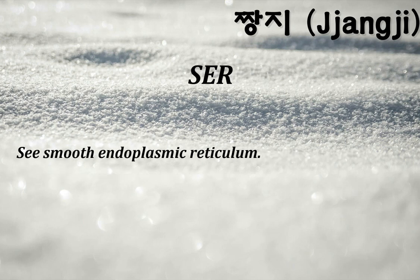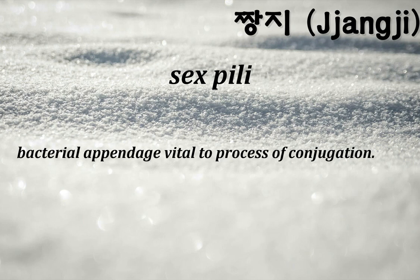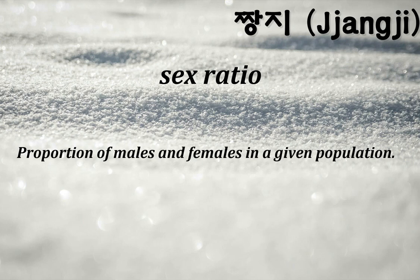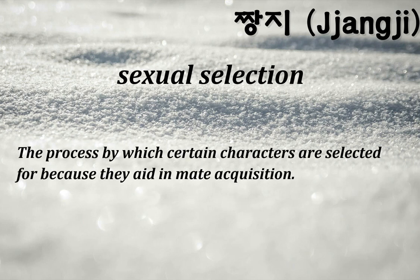Sensory neurons: nerve cells that receive and communicate information from the sensory environment. Septae: structures that divide the hyphae filaments of fungi into different compartments. SER: smooth endoplasmic reticulum. Sex pilus: bacterial appendage vital to the process of conjugation. Sex ratio: proportion of males and females in a given population. Sexual selection: the process by which certain characters are selected for because they aid in mate acquisition.